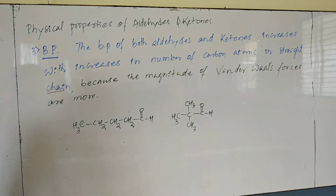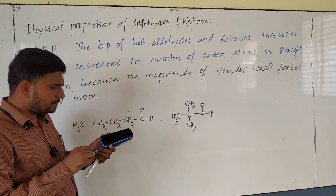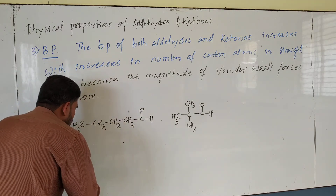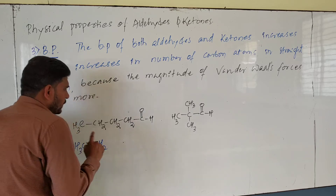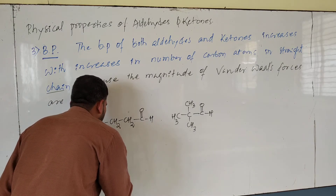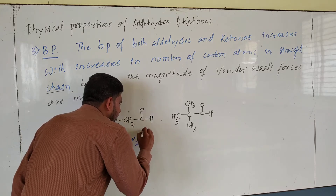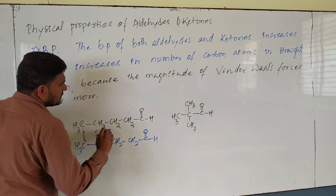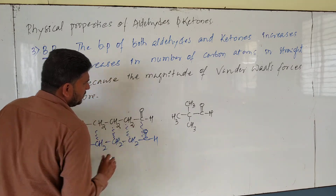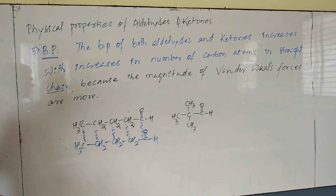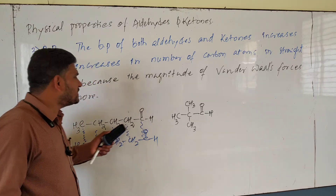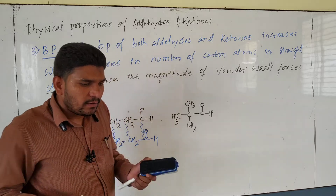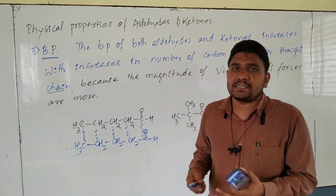The magnitude of van der Waals forces is higher for straight-chain molecules. In one mole of pentanal, there are 6.022×10²³ molecules, and van der Waals forces of attraction exist between all of them. The magnitude of these forces is high for straight-chain molecules. But when branching in the molecule increases, the boiling point decreases because the magnitude of van der Waals forces decreases.